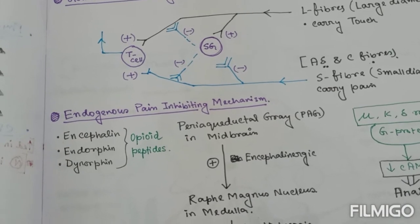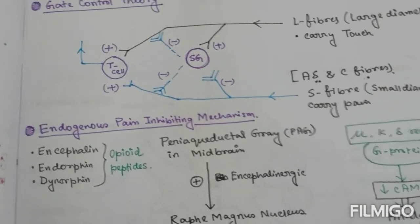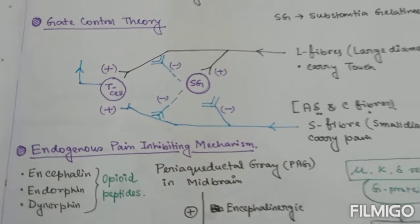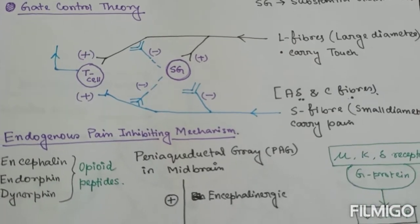And thereby, activity in the small diameter pain fibers is transmitted centrally through the T cell as pain sensation.